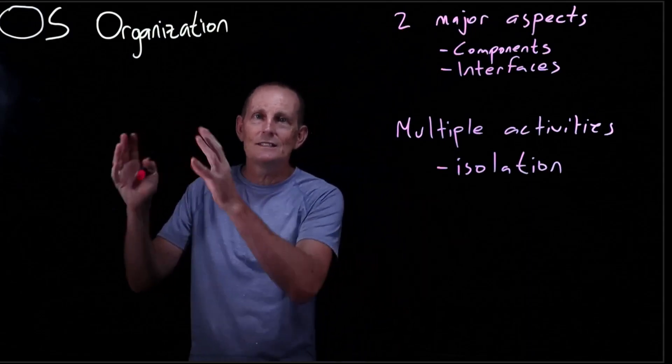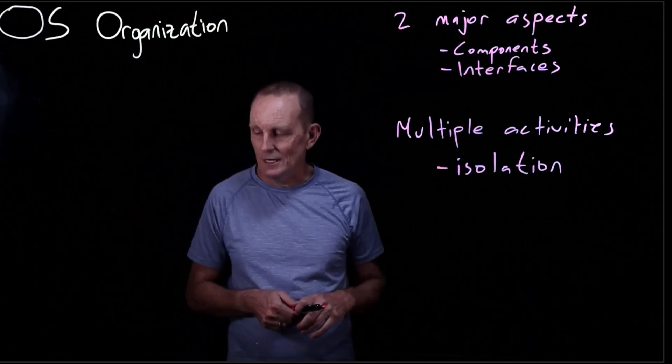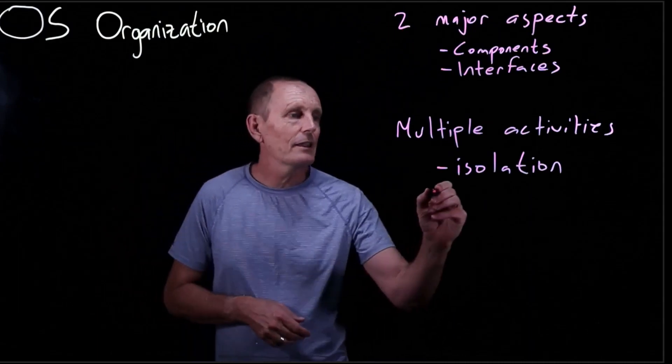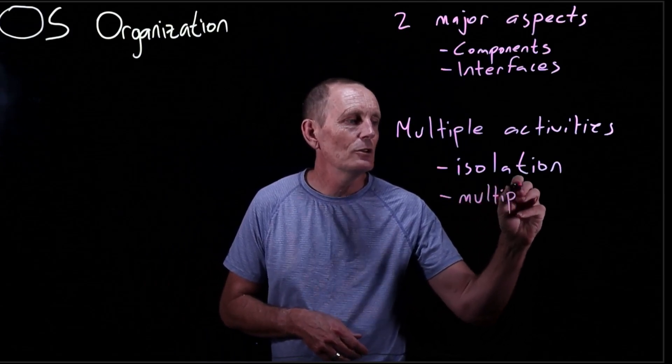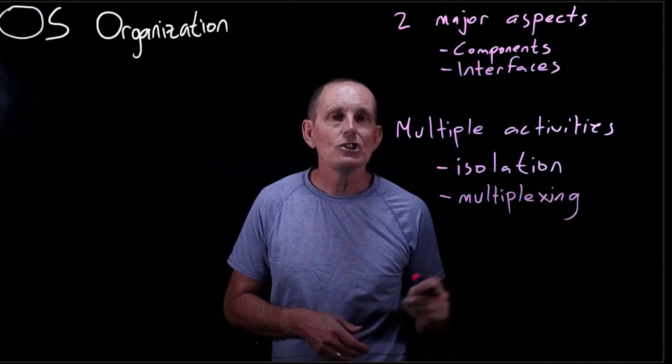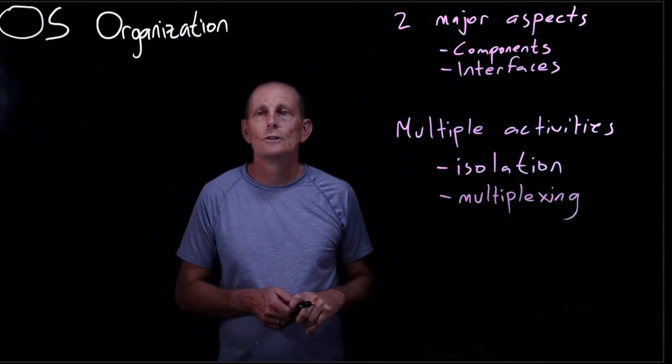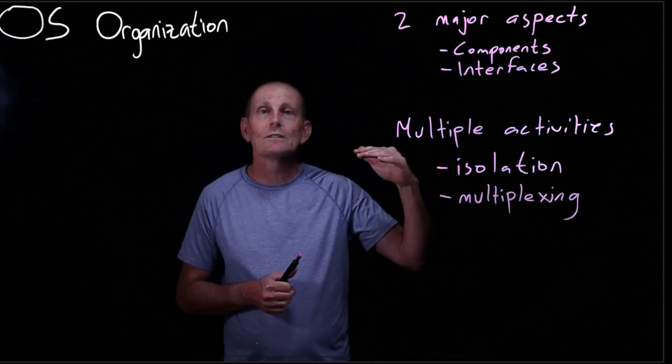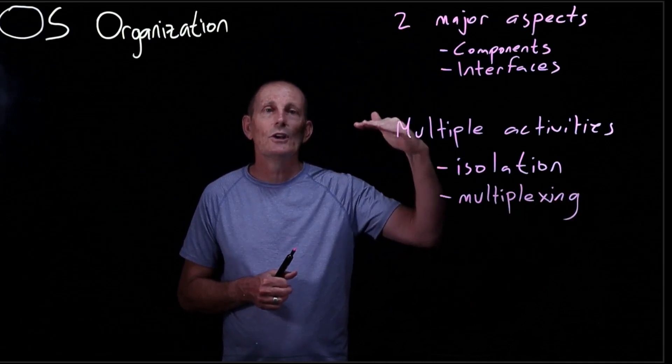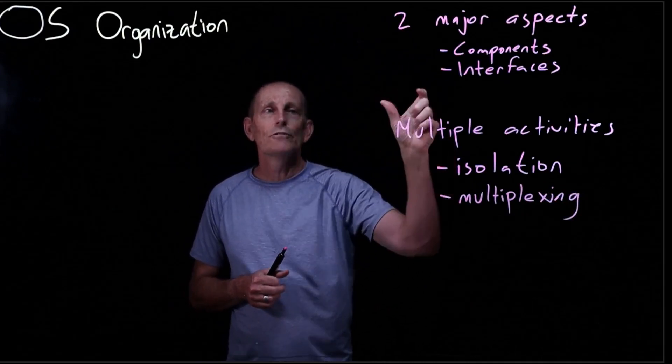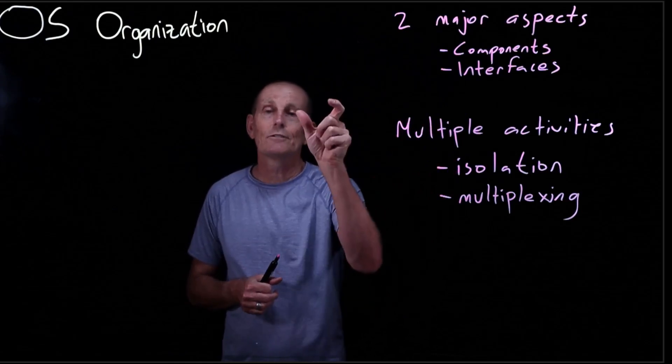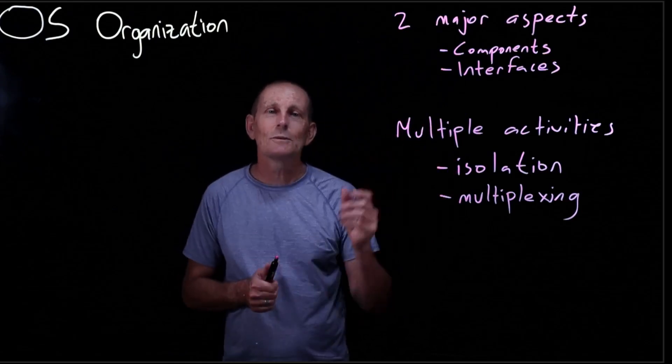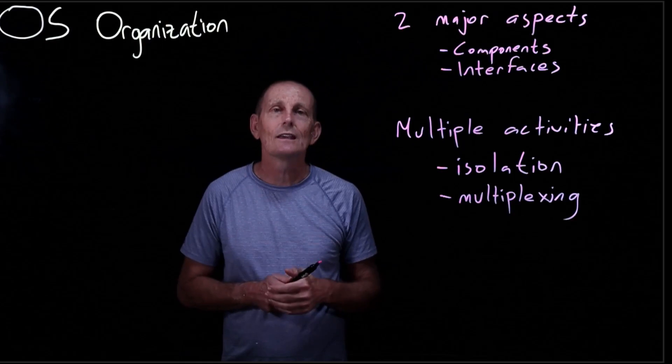Another thing you want is multiplexing, that is the ability to share a single resource. We look at time multiplexing. For example, if we have a single CPU, we're going to use that CPU for one application for a little while and then use it for another application, back to the first, then back to the second, so each of them gets this perception that they have their own CPU, but it's actually being shared across multiple applications.